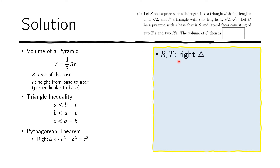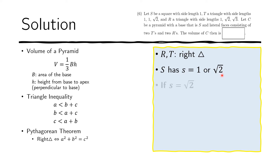We know that the faces of our pyramid are all right triangles, because the faces are either R or T, and both of these are right triangles. We also know that the base S could only have a side of either 1 or square root of 2.